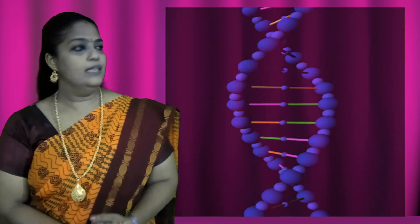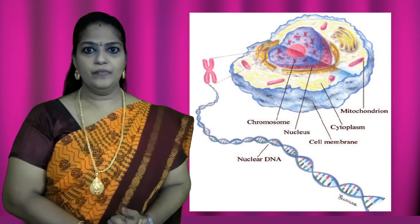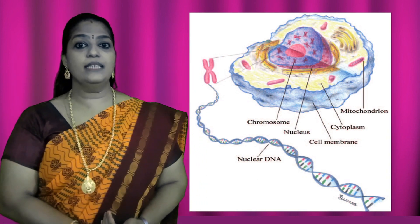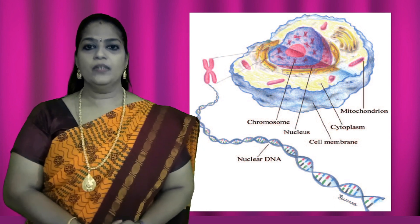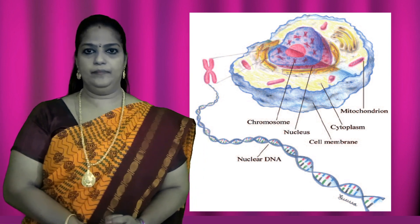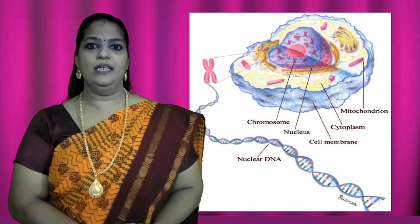Do you know what a genetic disease is? Before going into the details, let's see what a gene is. A gene is actually the hereditary factor of an organism. It is located inside our cell. Inside the cell, as we have studied in previous classes, there is an organelle called the nucleus, which has a nucleolus, nucleoplasm, and nuclear membrane. Apart from that, there is an important part called the genetic material — DNA.